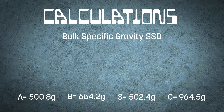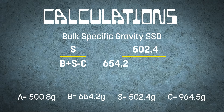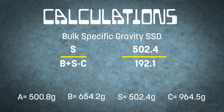The first calculation is the bulk specific gravity of your material in the SSD condition. Take the weight of the SSD specimen, S, and divide it by B plus S minus C. Plugging in the numbers: 502.4 grams divided by 654.2 grams plus 502.4 grams minus 964.5 grams equals 502.4 grams divided by 192.1 grams, for a specific gravity of 2.615.